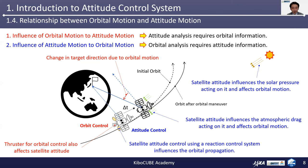On the contrary, satellite attitude control using a reaction control system based on thrusters also influences the orbital propagation of the satellite. Additionally, the magnitude of solar pressure and Earth's atmospheric drag acting on the surface of the satellite are influenced by the satellite attitude, and consequently affect the orbital motion. In this way, the orbital motion and attitude motion influence each other. Therefore, orbital information is required for the attitude analysis, and attitude information is required for the orbital analysis as well.